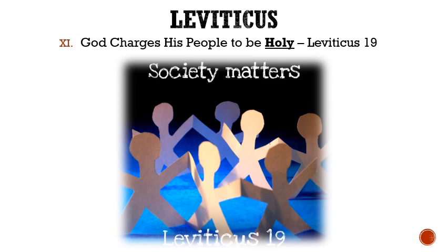Roman numeral 11: In Leviticus 19, God charges his people to be holy. For them to do this, they had to follow his commandments. While many of them listed in this chapter we have already discussed, here are some new ones. First, while reaping your harvest, the corners of the fields were to be left for the poor and the immigrants to pick for themselves. Secondly, they were to pay their servants on the same day. Thirdly, do not mistreat the deaf or blind. Fourth, do not show partiality to anyone no matter their physical or financial abilities. Fifthly, love your neighbors as yourself and do not be vengeful against them.